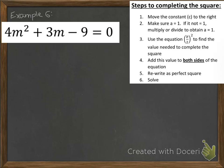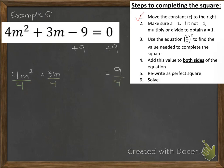Example 6: we have 4m squared plus 3m minus 9 equals 0. The first thing we do is move the constant to the right by adding 9 to both sides, giving 4m squared plus 3m equals 9. Then, since a is 4 and not 1, we need to divide everything by 4. This gives m squared plus 3 fourths m equals 9 fourths.